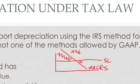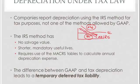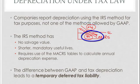Down here, your depreciation expense is much lower, so your IRS income is much higher. You pay your taxes based on this IRS income, so up here you're going to pay less taxes. Down here you're going to pay more taxes. This leads to what we call a deferred tax liability, which means I'm going to get a tax break now, but I'm going to have to pay more taxes later. So I have this liability.